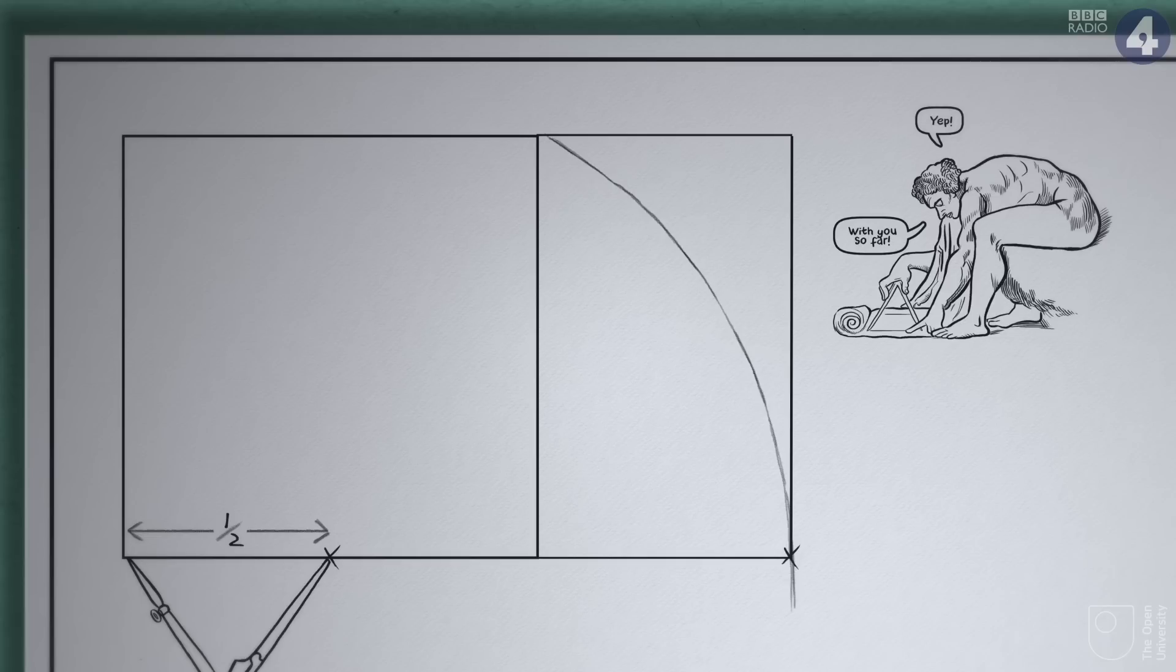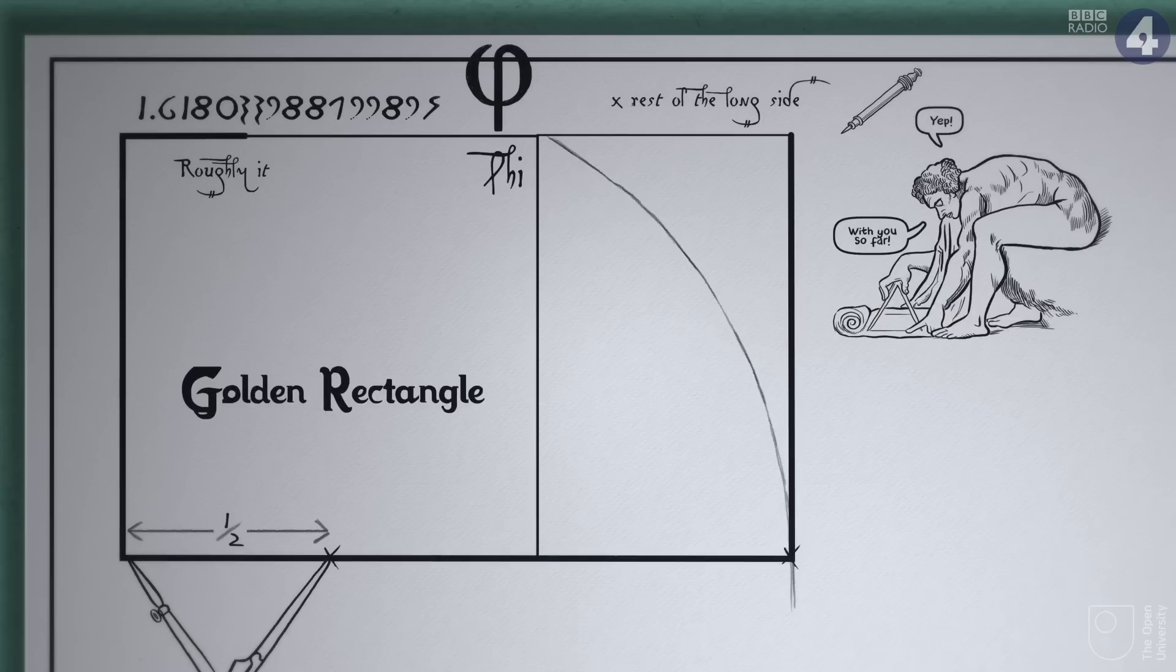You should have a rectangle in which the side of the square is 1.6180339887, the number goes on but this is roughly it, times the length of the rest of the long side. Congratulations. You have drawn a golden rectangle.